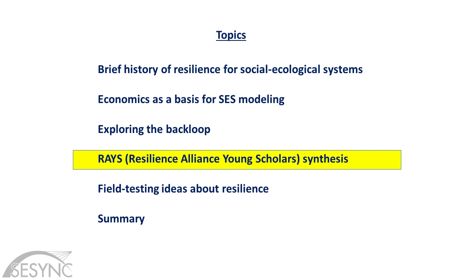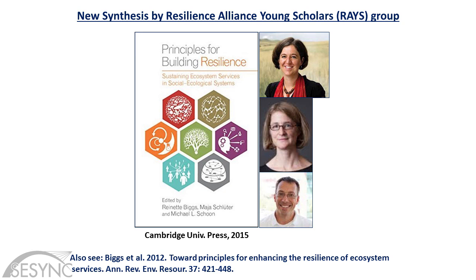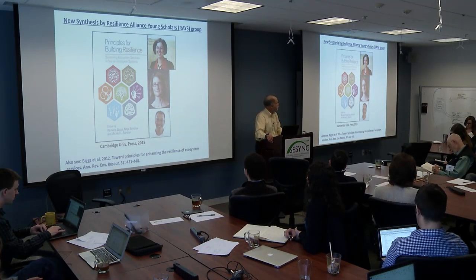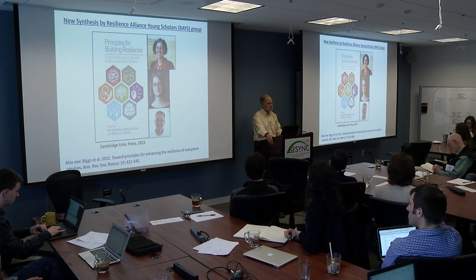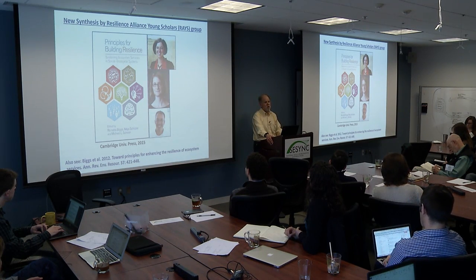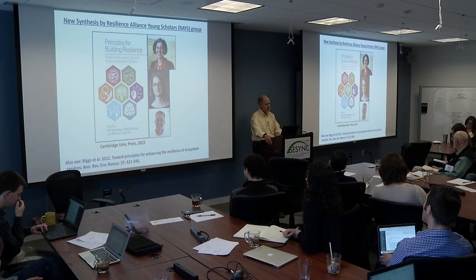I wanted to spend a few minutes talking about this new synthesis by the RAYS — the Resilience Alliance Young Scholars — because I think it might be useful to you in your thinking. This project was developed by about a dozen young people who went through their graduate student and post-doc years working on this book as a side project. The leaders are Wincy Biggs, one of my former grad students who now runs a complex systems institute in South Africa; Maya Schluter, an environmental economist at the Bayer Institute of Ecological Economics; and Michael Schoon, a political scientist at Arizona State.